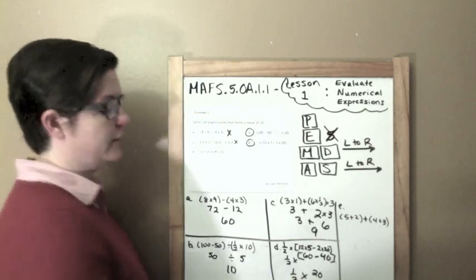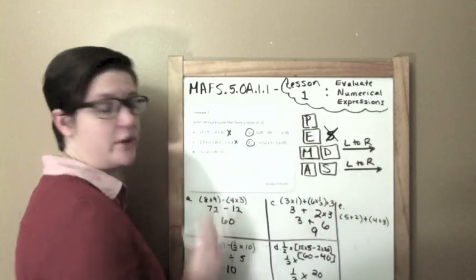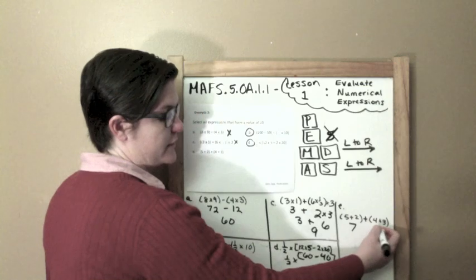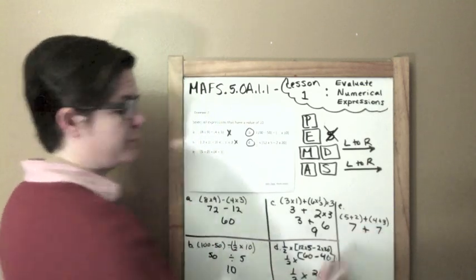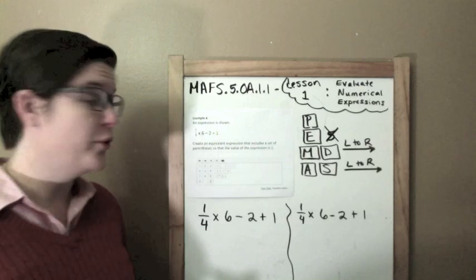Let's solve E. All right, I've got two sets of parentheses. Let me start there. 7 and 4 plus 3 is 7. Now that they're out of parentheses, I can add them. So 7 plus 7 equals 14, which is not a value of 10.